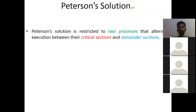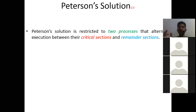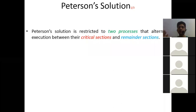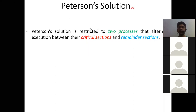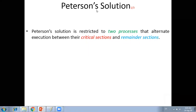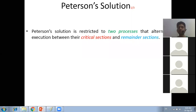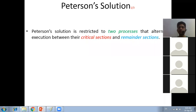Peterson's solution is restricted to two processes that alternate execution between their critical section and remainder section. Recall the four sections in the code: entry section, critical section, exit section, and remainder section.